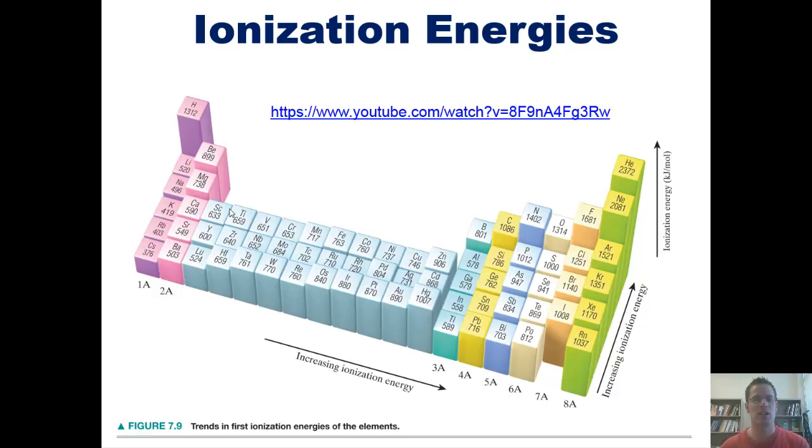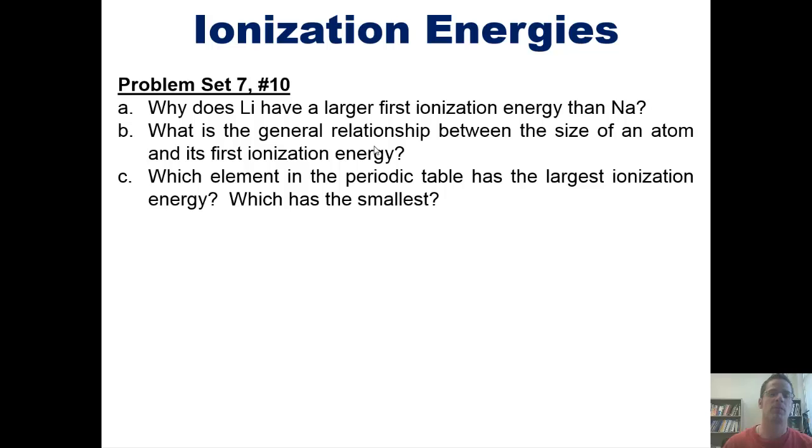This table shows us various ionization energies for most of the elements on the periodic table. These are first ionization energies—that is, the amount of energy required to remove a single electron from each of these respective atoms. There's also a really great video that helps show this graphically, whose HTML is right here. I will post a link here that you can click on if you want to open that video and watch it on a separate tab. That takes us to a series of problem set questions that I give my students in class.